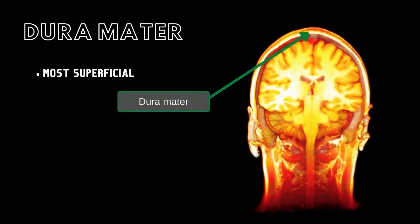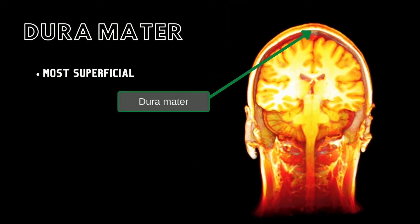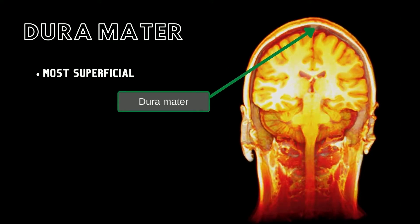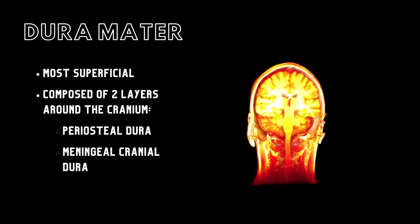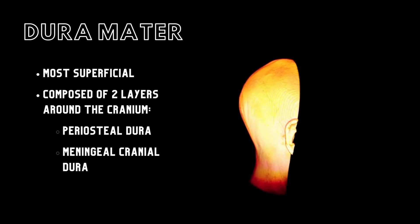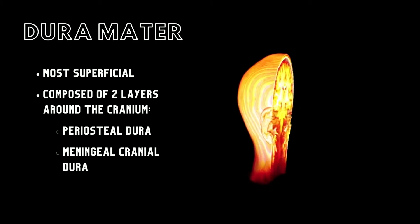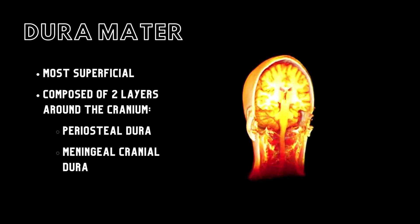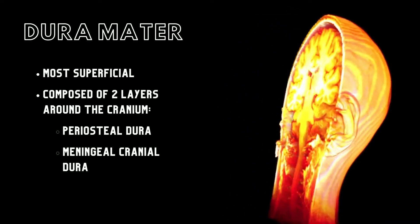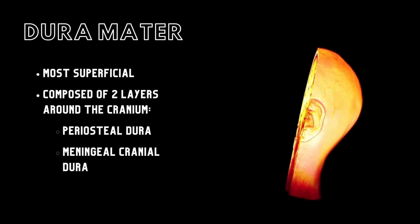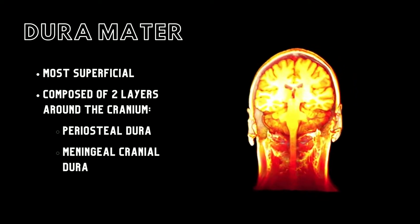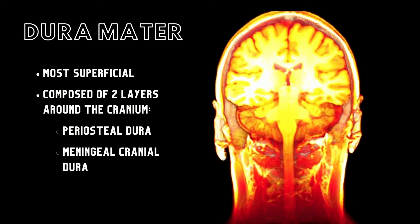The most superficial meningeal layer is the dura mater. The cranial dura mater has two layers and is composed of fibrous connective tissue. The outer layer is the periosteal dura and is fused with the periosteum lining the cranium. This outer layer only surrounds the brain and does not extend to the spinal cord past the foramen magnum. The inner layer is termed the meningeal cranial dura.